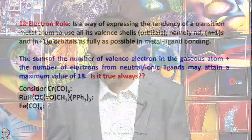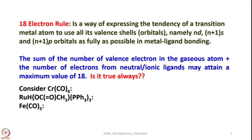I shall give you numerous examples so that you will become familiar with electron counting. First of all, let us look into what is the 18 electron rule. It is a way of expressing the tendency of a transition metal atom to use all its valence shell. When we talk about transition elements, we have 3 valence orbitals: nd orbitals, (n+1)s orbital, and (n+1)p orbitals. That means we have a total of 5+1+3 = 9 orbitals, with a capacity of 2 electrons each, giving 18 electrons. These metals have a tendency to fill as many electrons as possible into their valence shell so that they have 18 electrons at the end — that is called the 18 electron rule.